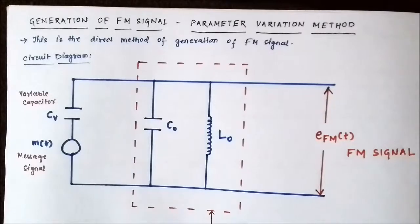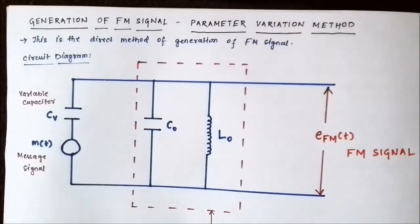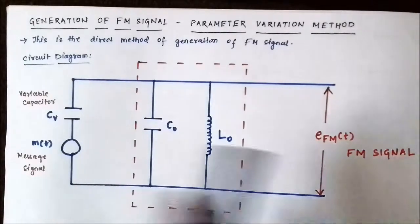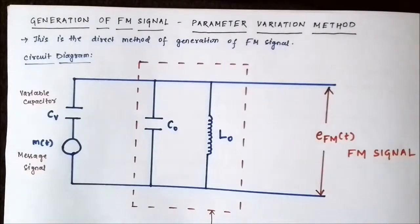The parameter variation method is the direct method of generation of a frequency modulated signal. In both cases we try to get a wideband frequency modulated signal so that we get a high value of modulation index, frequency deviation, and a greater number of sidebands. This is the circuit diagram involved in the parameter variation method of generation of FM signal.